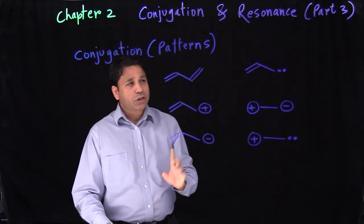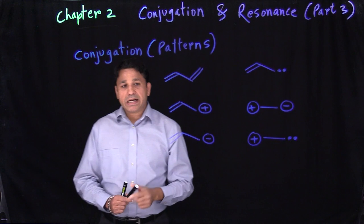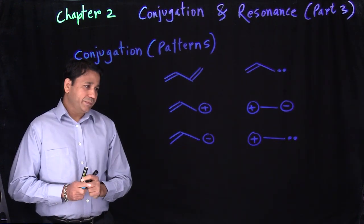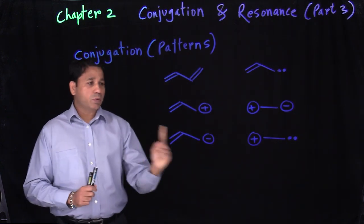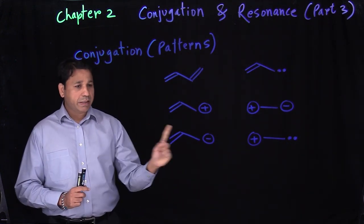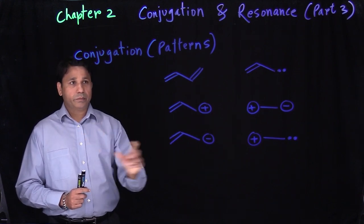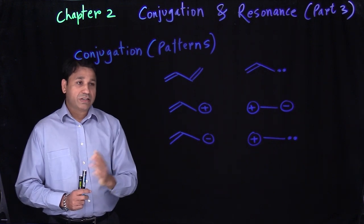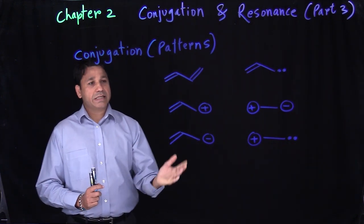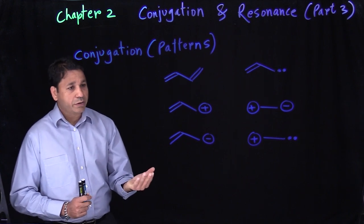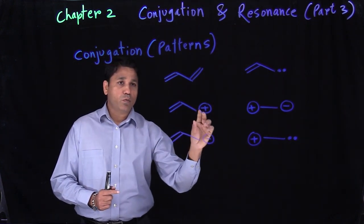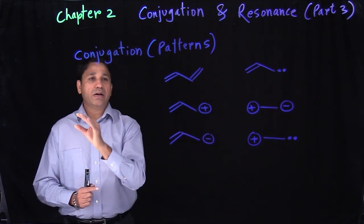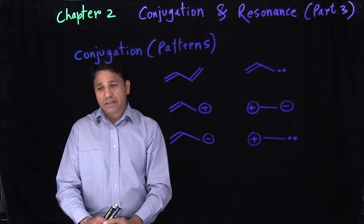Before we actually go into resonance, we need to understand a couple of things. Resonance means moving from one place to another place continuously. Think of the clock pendulum going from left to right — that's called resonance. In this case, what we are trying to do is move two electrons from one place to another place in a molecule, from left to right, right to left. That is your resonance.